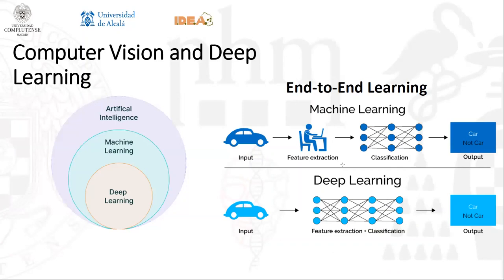Deep learning is a subfield of machine learning, which itself is another subfield within the broader field of artificial intelligence. Deep learning is characterized by the concept of end-to-end learning. Unlike machine learning algorithms, deep learning does not require variables to be selected and extracted by the analyst. This means that unprocessed data can be passed directly to the algorithm, and said algorithm will be in charge of identifying and extracting the necessary data to get an output classification. This method is especially useful for problems where it is difficult to define and accurately describe the variables involved, as is the case for our experiments.